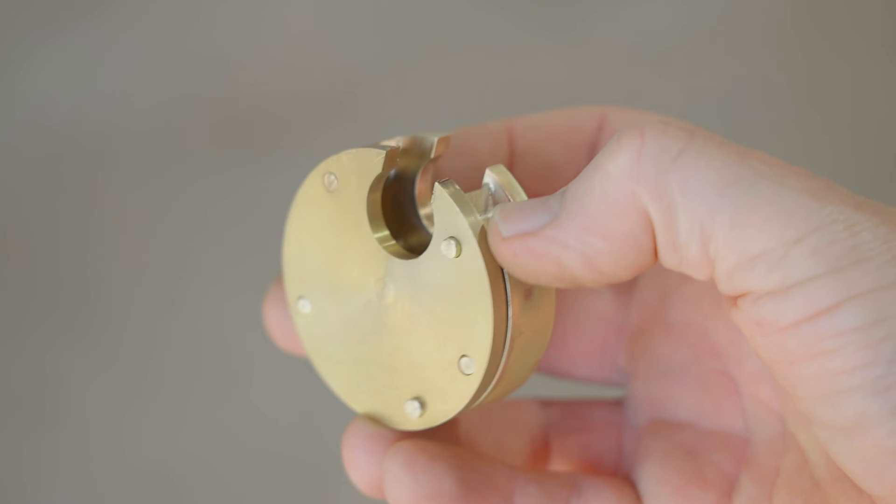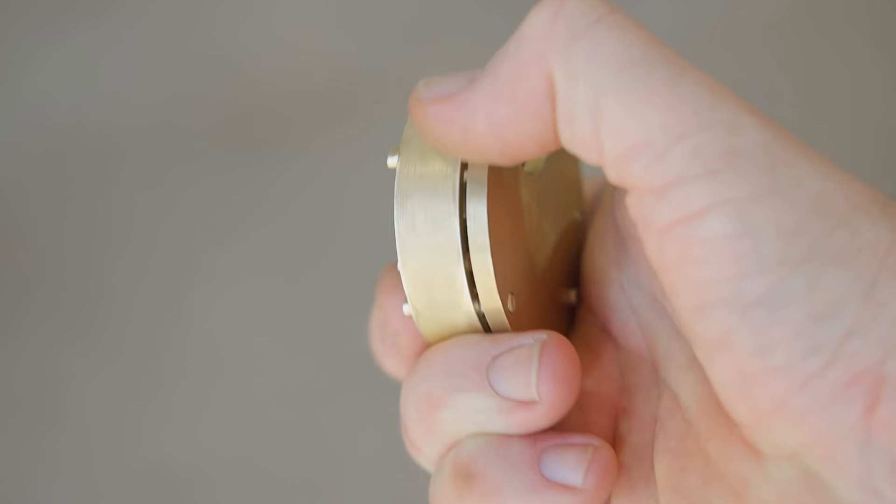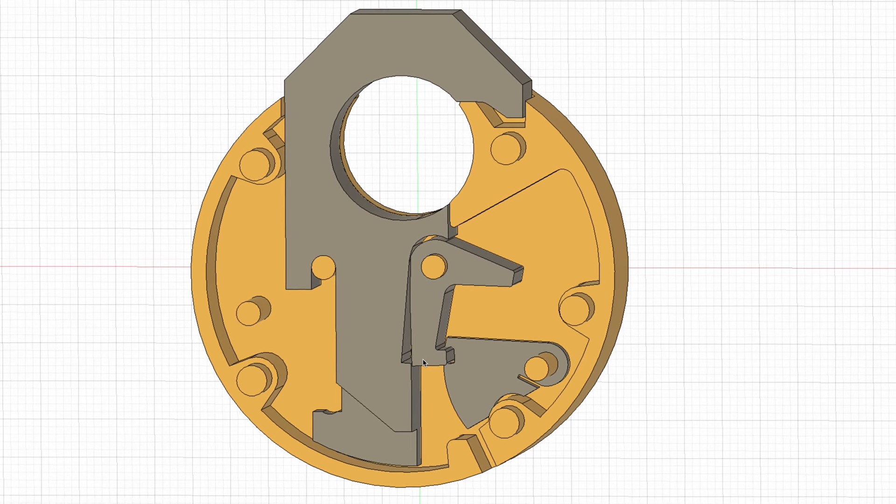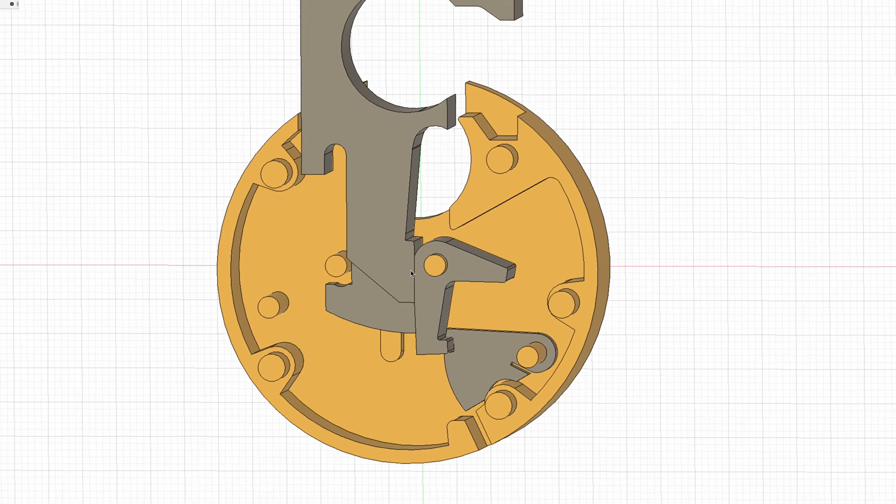Welcome to part two of my brass padlock project. In part one I made the case of the lock and in this part I'll start on the internal moving parts.